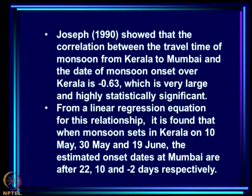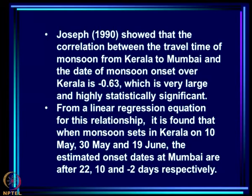Joseph has done an interesting study showing that the correlation between the travel time of monsoon from Kerala to Mumbai - meaning onset date over Mumbai minus onset date over Kerala - and the date of monsoon onset over Kerala is minus 0.63, which is very large and highly significant. What it is saying is that the later the monsoon onset occurs over Kerala, the shorter the time it takes for the onset to occur in Mumbai after that.